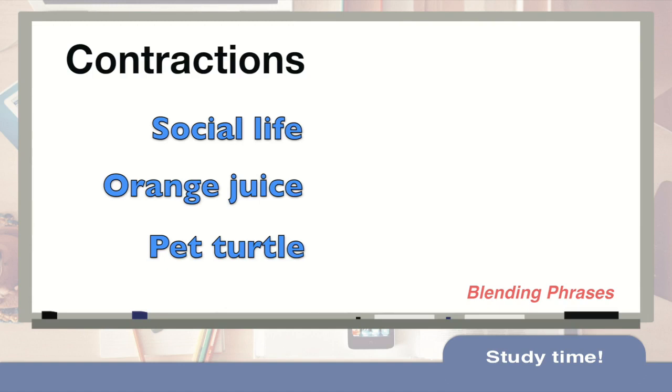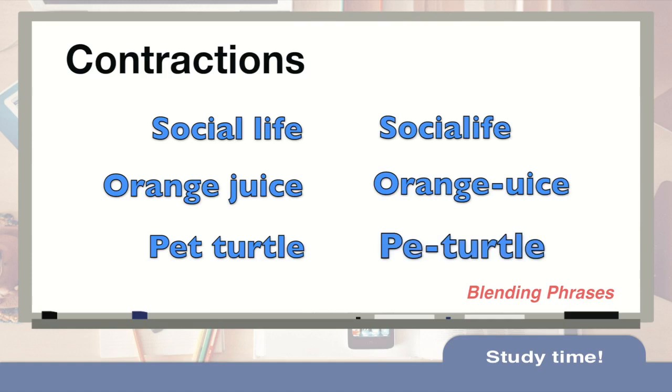In the phrase social life, the joining sound is 'l'. The second phrase orange juice is a little more difficult to see because of the spelling, but if you use your ears, you can see that orange and juice both have the joining sound of 'j'. Native English speakers will make the joining sound only once, as this speeds up their speech. So instead of social life, we say social life. Orange juice becomes orange juice. And pet turtle becomes pet turtle.